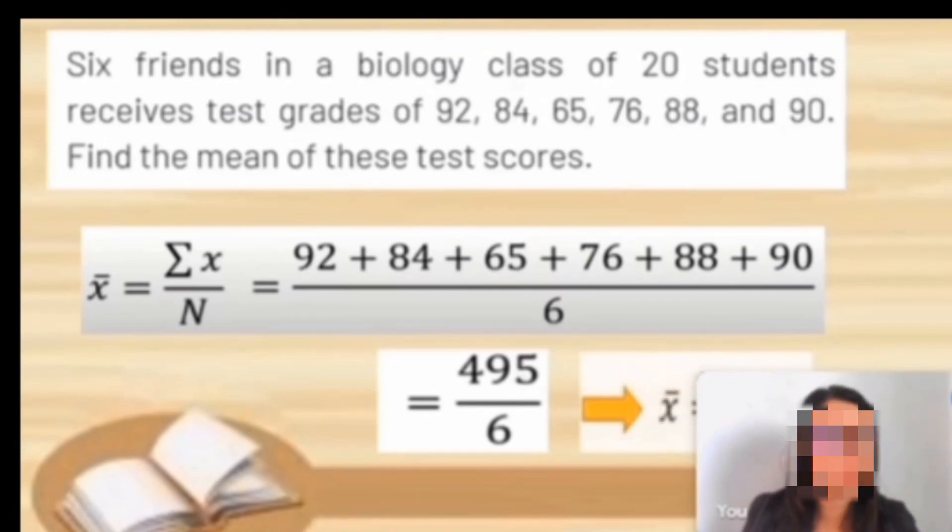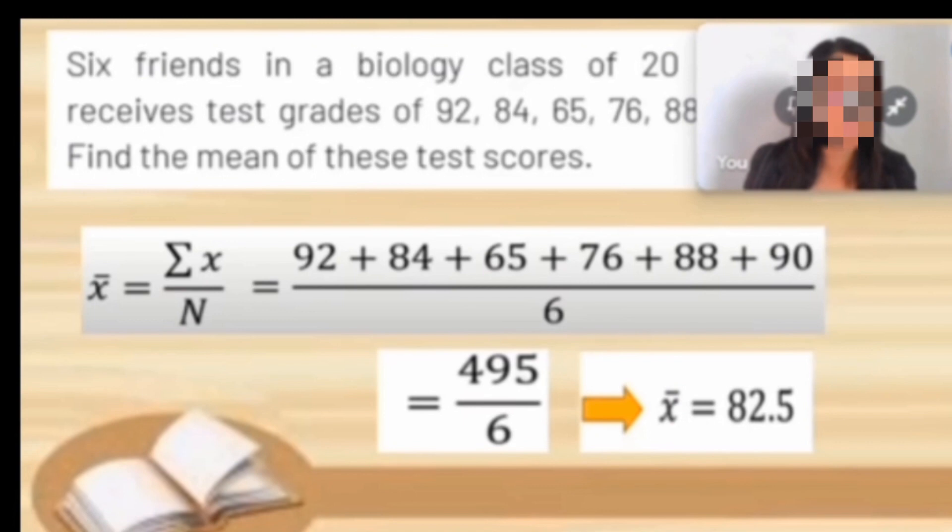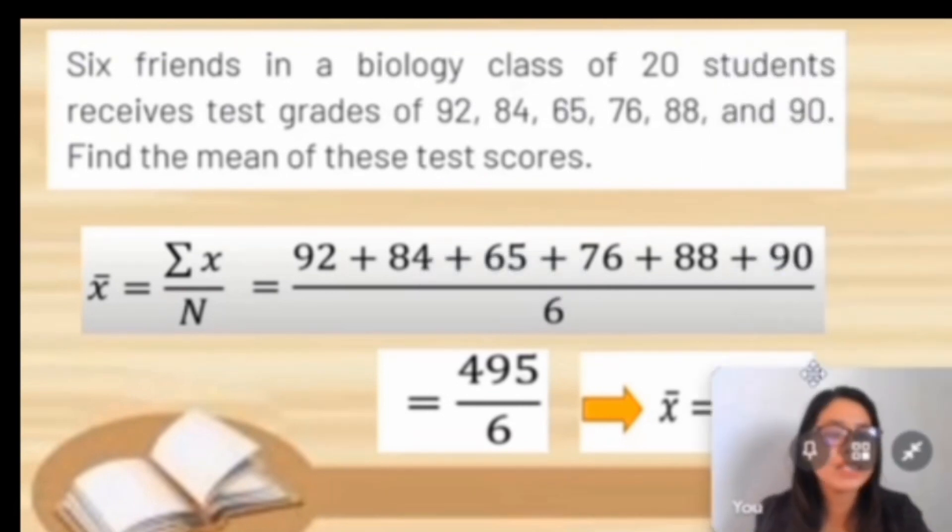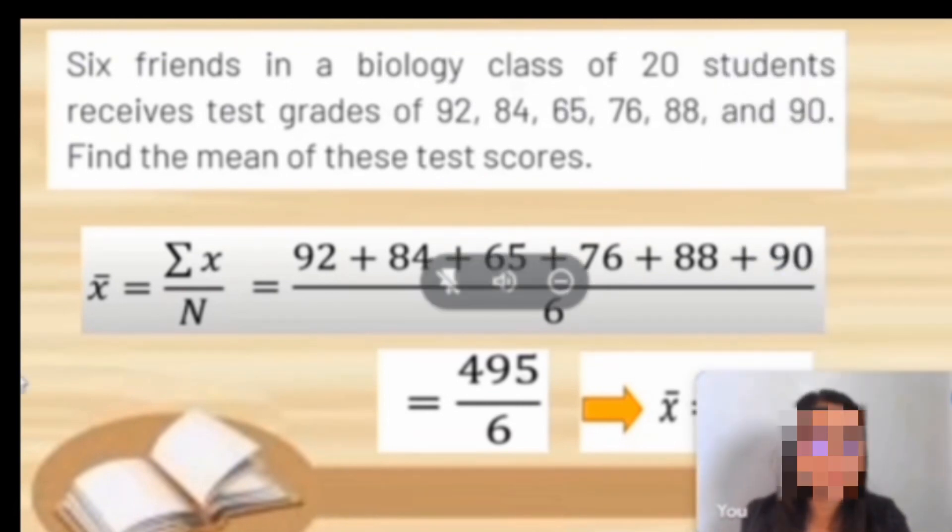Our n is 6 because we have 6 students. The total is 495 over 6, and then our mean is 82.5. Is it clear? Very good. Now class, let's proceed to median. Who can define median based on your own idea?